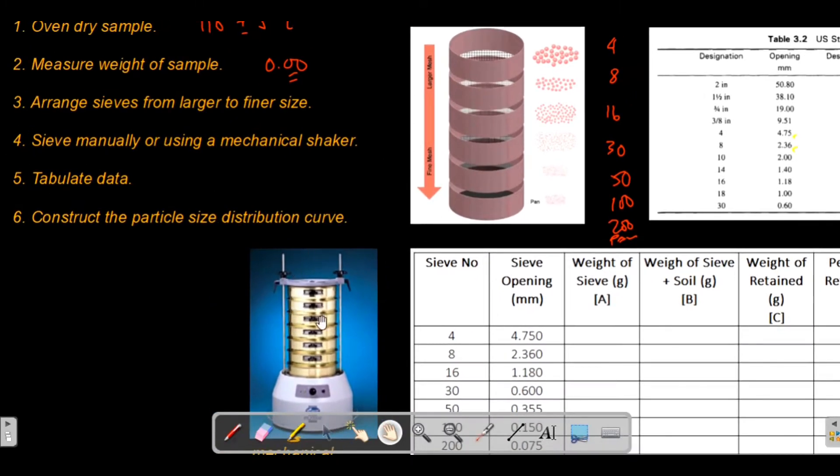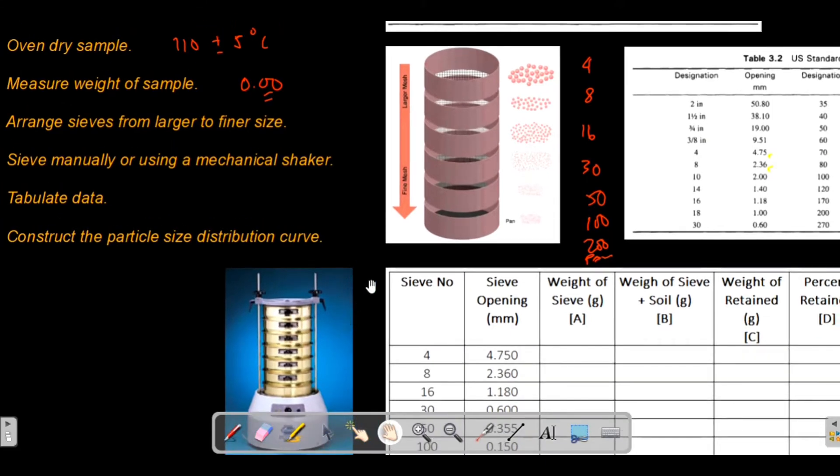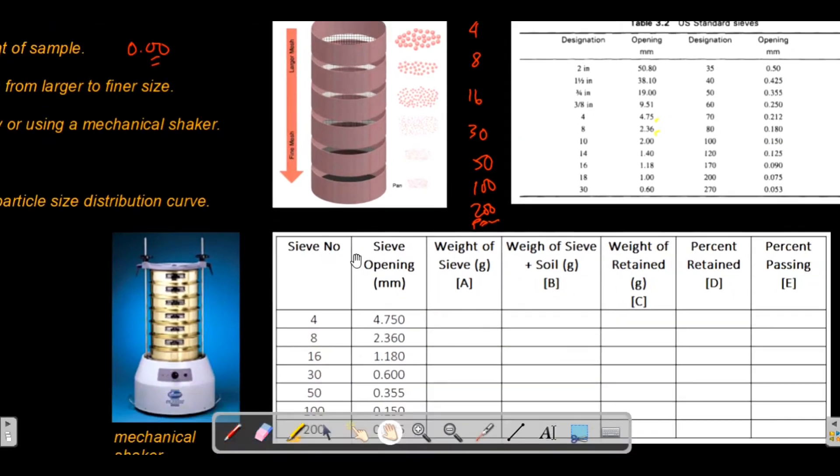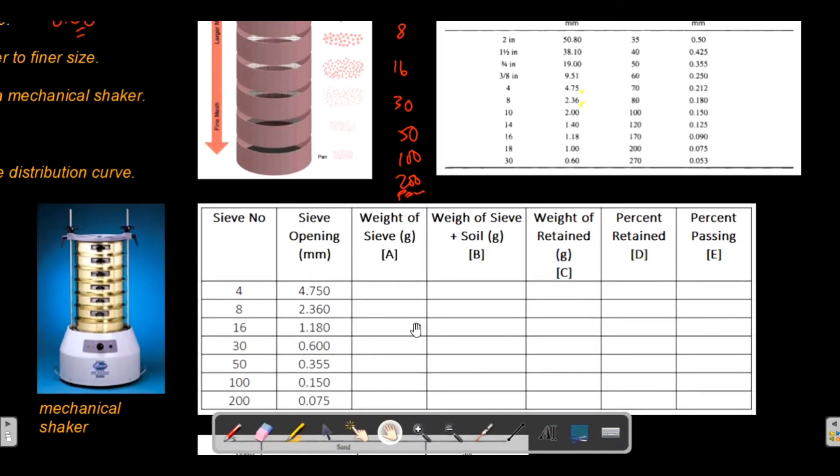After sieving or shaking your sieves, some of the soil particles will be retained. Particles larger than 4.75 mm will be retained here and so on. Particles larger than 2.36 mm will be retained on the second sieve. And then you have to tabulate your data.